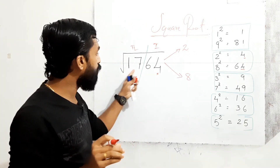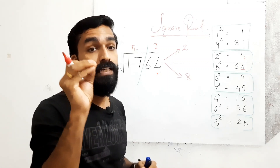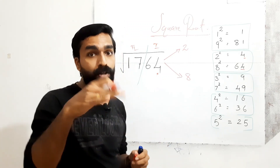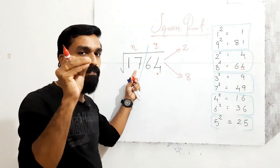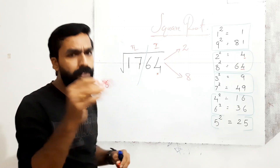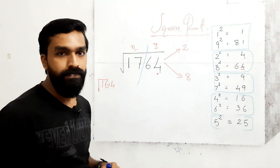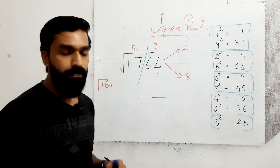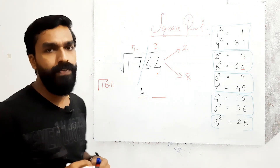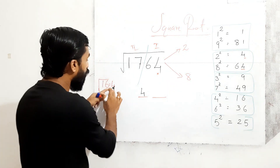Next, take the second group: 17. Find the nearest perfect square number below 17. We know that is 16, which is a perfect square. Find its square root — it is 4. So in the answer, the two-digit number's tens place is 4. Write 4 in the tens place. Now find the unit place using these options.